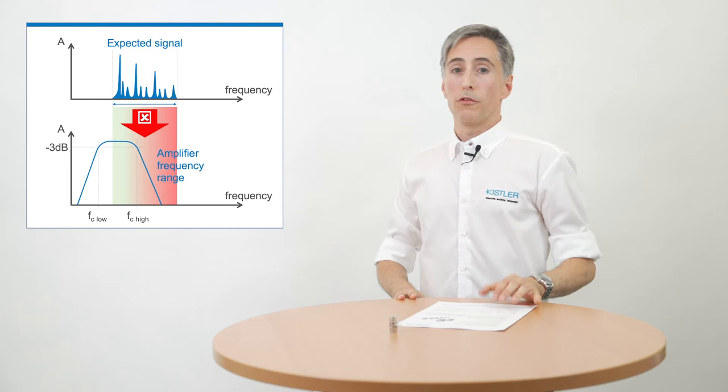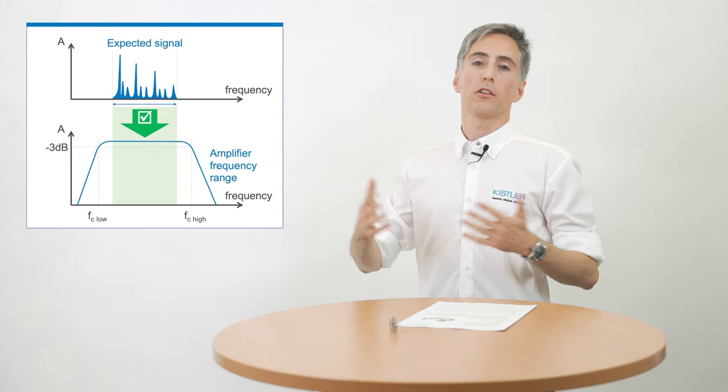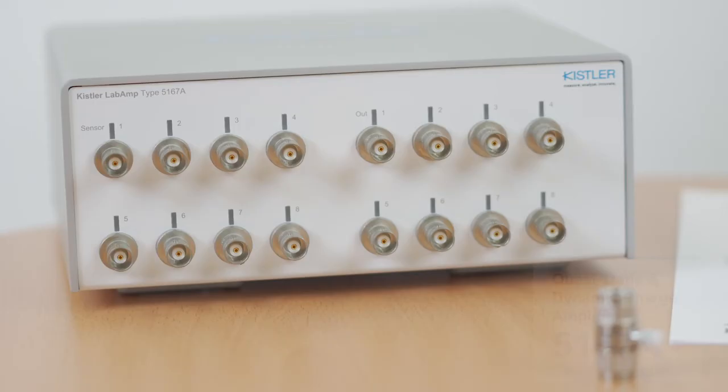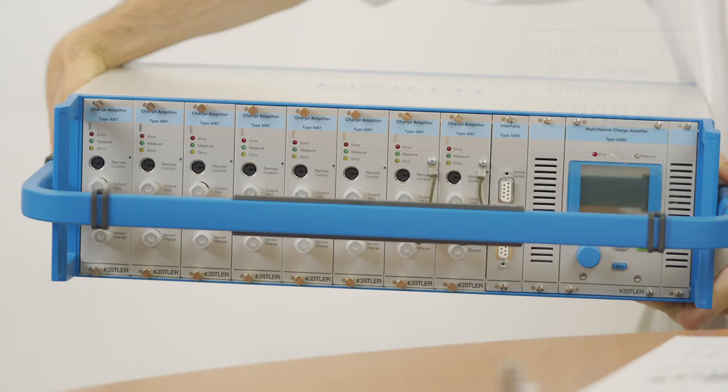The faster your signals are, or the higher the frequency content of your signal is, the wider the frequency range of your amplifier must be of course. Some amplifiers go up to 2 or 20 kHz, but others go even higher, up to 45 kHz for example, like this quasi-static LabAmp 5167A. High-end laboratory amplifiers have their minus 3 dB limit at 200 kHz, like this 5080 for example.